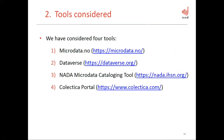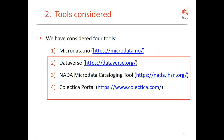As for the second step, we knew about four tools: Microdata.no, developed by the Norwegian Centre for Research Data; Dataverse, supported by Harvard University and CESDA; NADA, a microdata cataloging tool developed by the International Household Survey Research Network; and Colectica Portal. Since Microdata.no is not open for use, we focused only on Dataverse, NADA, and Colectica Portal.